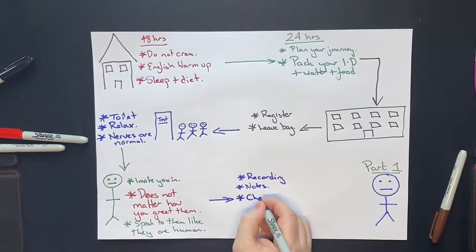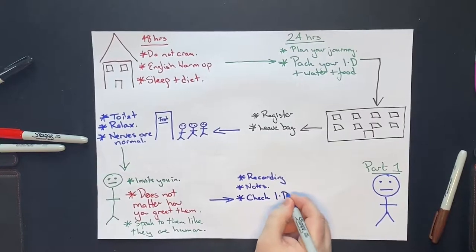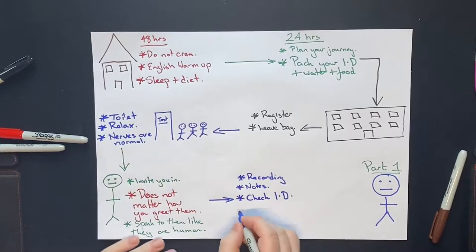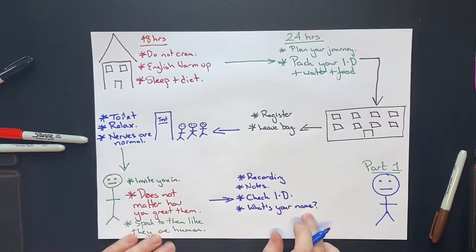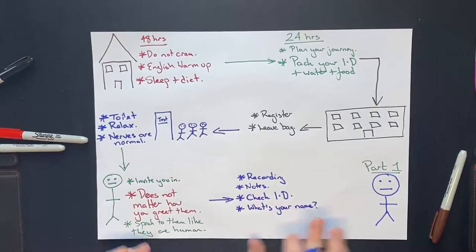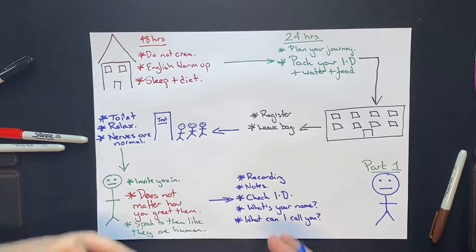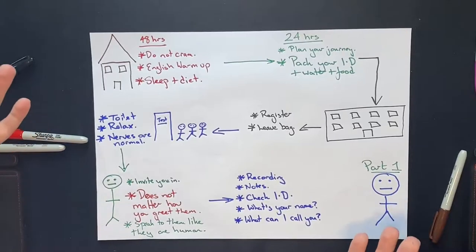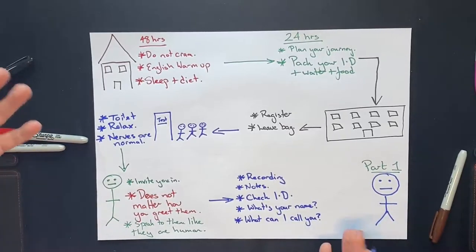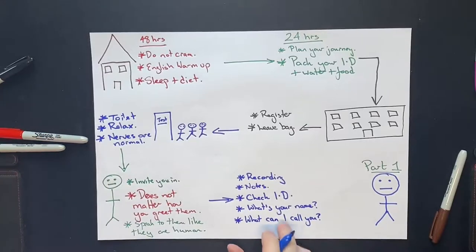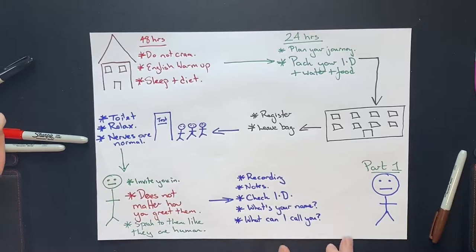They'll then ask you if they can double check your ID, hand it to them. You don't have to worry about this. And then they'll ask you two questions. What's your name? Just tell them your name. There is no special way of telling them your name. That's not that complicated. And then they'll say, what can I call you? And you just say, you can call me whatever, whatever your name is, whatever you want to be called. Again, there's no special way of saying this. Just tell them you're not being judged yet.